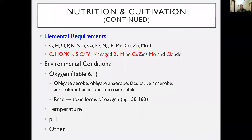Moving on to nutrition — remember we spoke about macro and micronutrients at the start of the lecture. A useful mnemonic is 'CHOPKNSCaFe Managed By Mine Cousins Mo and Claude,' which gives you a breakdown of elemental requirements. Trace metals include manganese (Mn), zinc (Zn), copper (Cu), cobalt (Co), and molybdenum (Mo). Microbes often also need a little sodium in order to grow optimally.